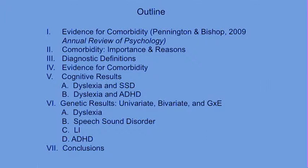Here's an outline of what I'm going to cover: I'll first present evidence for comorbidity and talk about why it's important. Then I'll give diagnostic definitions of the disorders I'm focusing on. Then I'll discuss cognitive methods for understanding these comorbidities and what we've learned, followed by genetic methods, and finally conclusions.